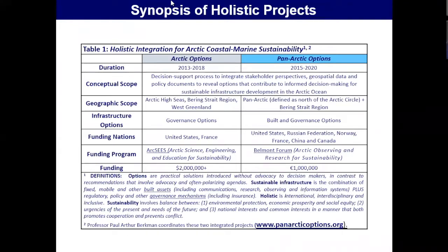Of these three elements — international, interdisciplinary, and inclusive — inclusion is by far the biggest challenge. It ranges from the types of data to be collected, organized, and interpreted, to the types of stakeholders to be included. Sustainability is identified in terms of balance: balance between environmental protection, economic prosperity, and societal well-being, but also balance between urgencies of the present and the needs of the future, as well as balance between national interests and common interests in a manner that promotes cooperation and prevents conflict.